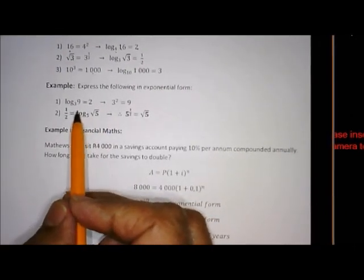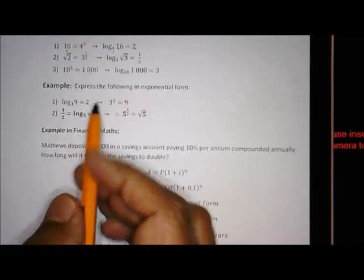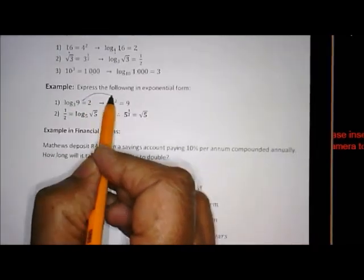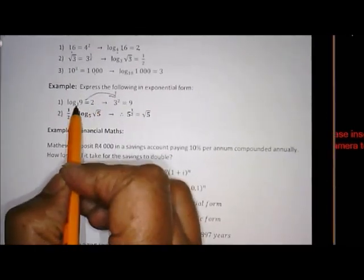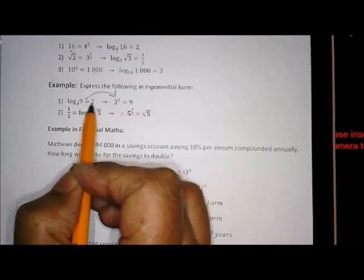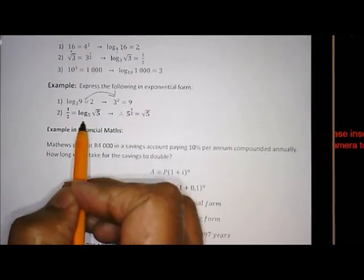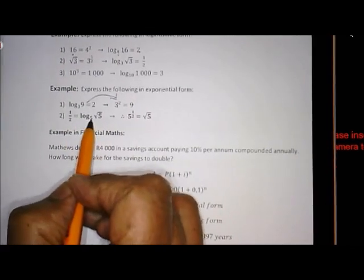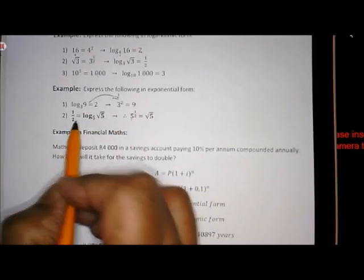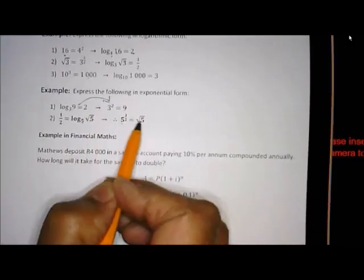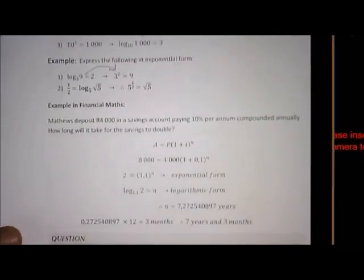Look at this one here. Now I must write it back, so from log I can write it back into exponential. So 3 is the base, 2 is the exponent, and 9 is the number. Same here: 5 is the base, half is the exponent, and square root 5 is the number. Now let's see the application in financial maths.